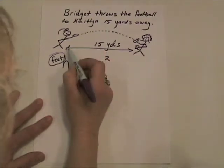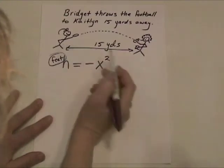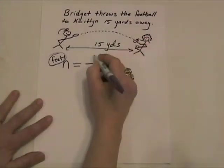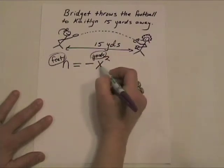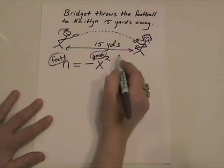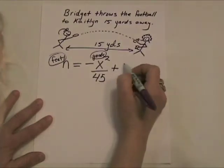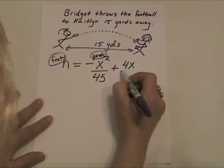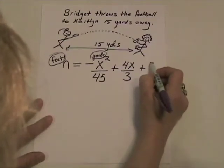X is the distance that the ball is away from Bridget in yards. So we've got the opposite of x squared over 45, plus 4x over 3, plus 5.